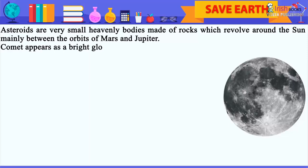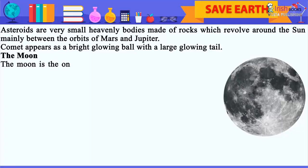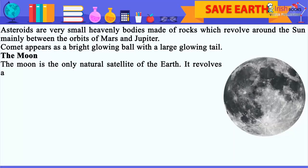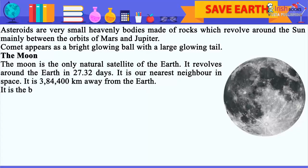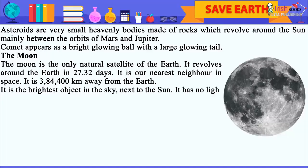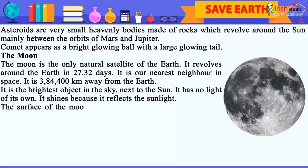A comet appears as a bright glowing ball with a large glowing tail. The moon is the only natural satellite of the earth. It revolves around the earth in 27.32 days. It is our nearest neighbor in space. It is 3,84,400 km away from the earth. It is the brightest object in the sky next to the sun. It has no light of its own and shines because it reflects sunlight.